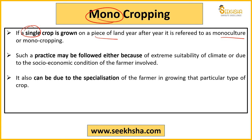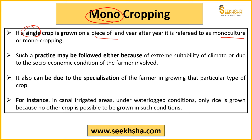Monocropping is generally practiced in areas where the land size is large and the farmer has specialization in growing a particular crop in that particular area. For example, in canal-irrigated areas or waterlogged conditions where proper irrigation is available, rice is grown because no other crop can grow there. So the type of soil, climate, and irrigation facility all matter in this context.